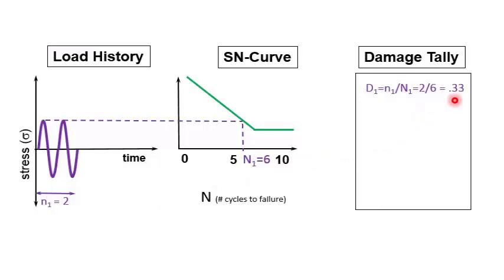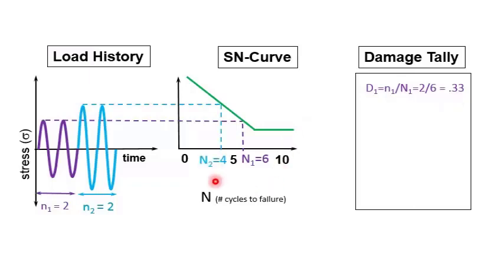So our part has not failed, which is good. So let's say we have some more cycles, two more cycles at a higher level. If we look at that stress level over in the S-N curve, we can see that we have four cycles to failure normally.